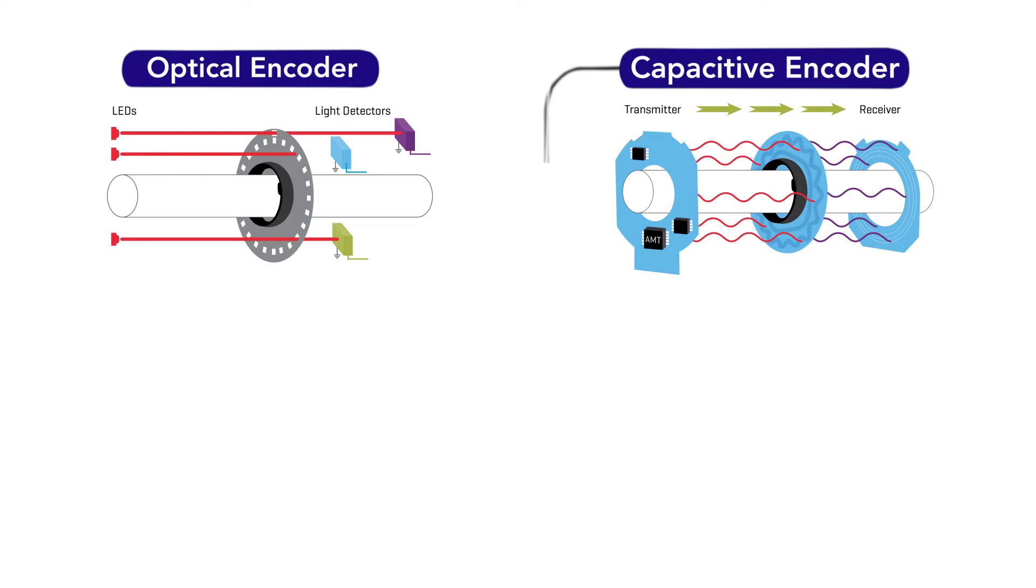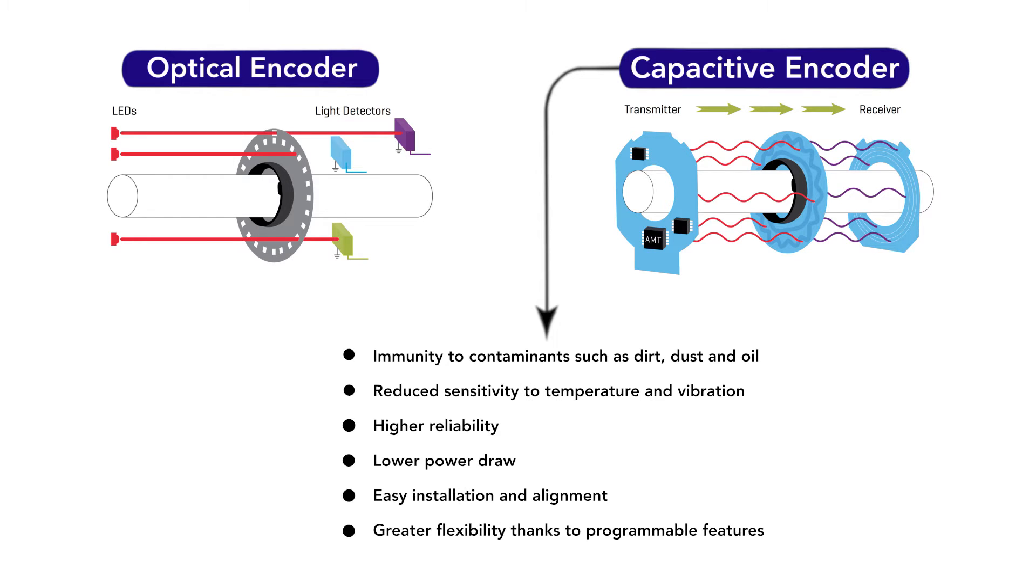Capacitive encoders offer advantages over common optical-based encoders. These include immunity to contaminants such as dirt, dust, and oil, reduced sensitivity to temperature and vibration, higher reliability, and lower power drop.